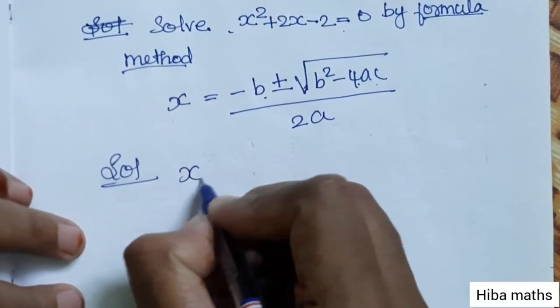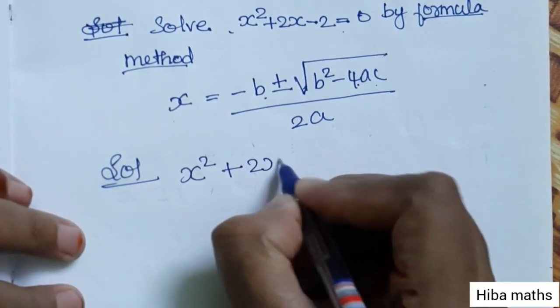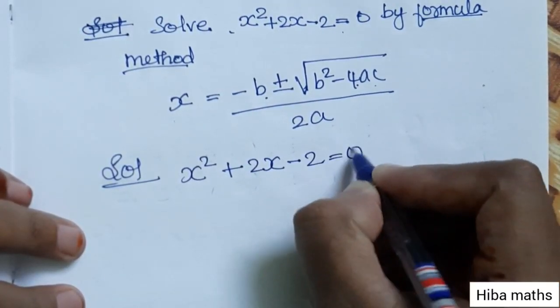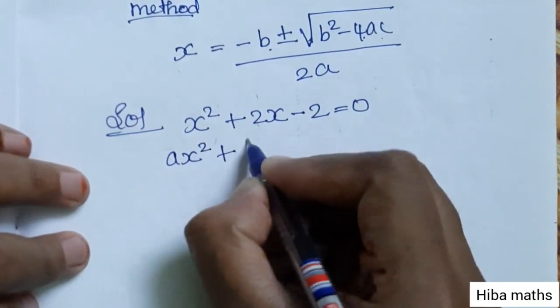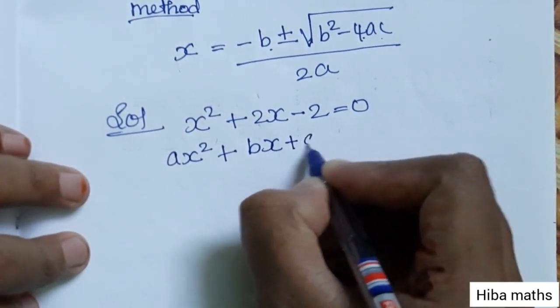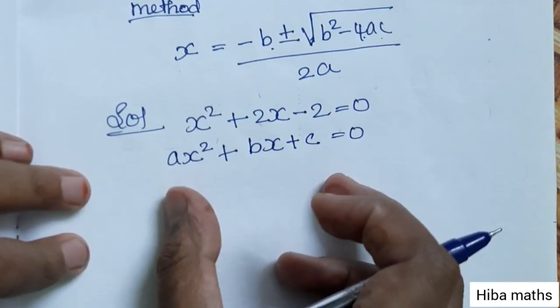In the solution, x² plus 2x minus 2 equals 0. We will compare with the general form: ax² plus bx plus c equals 0. This is the general format.